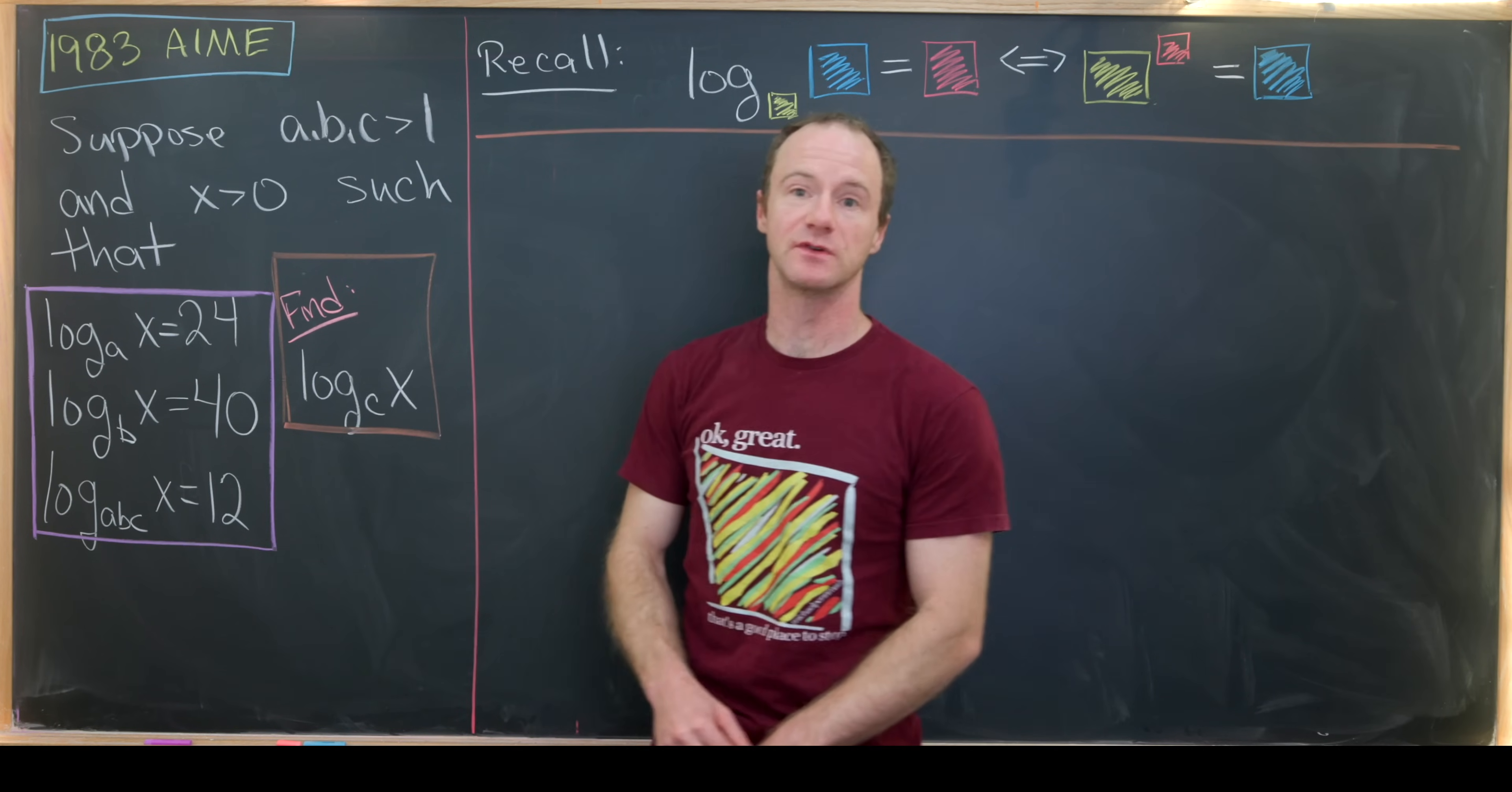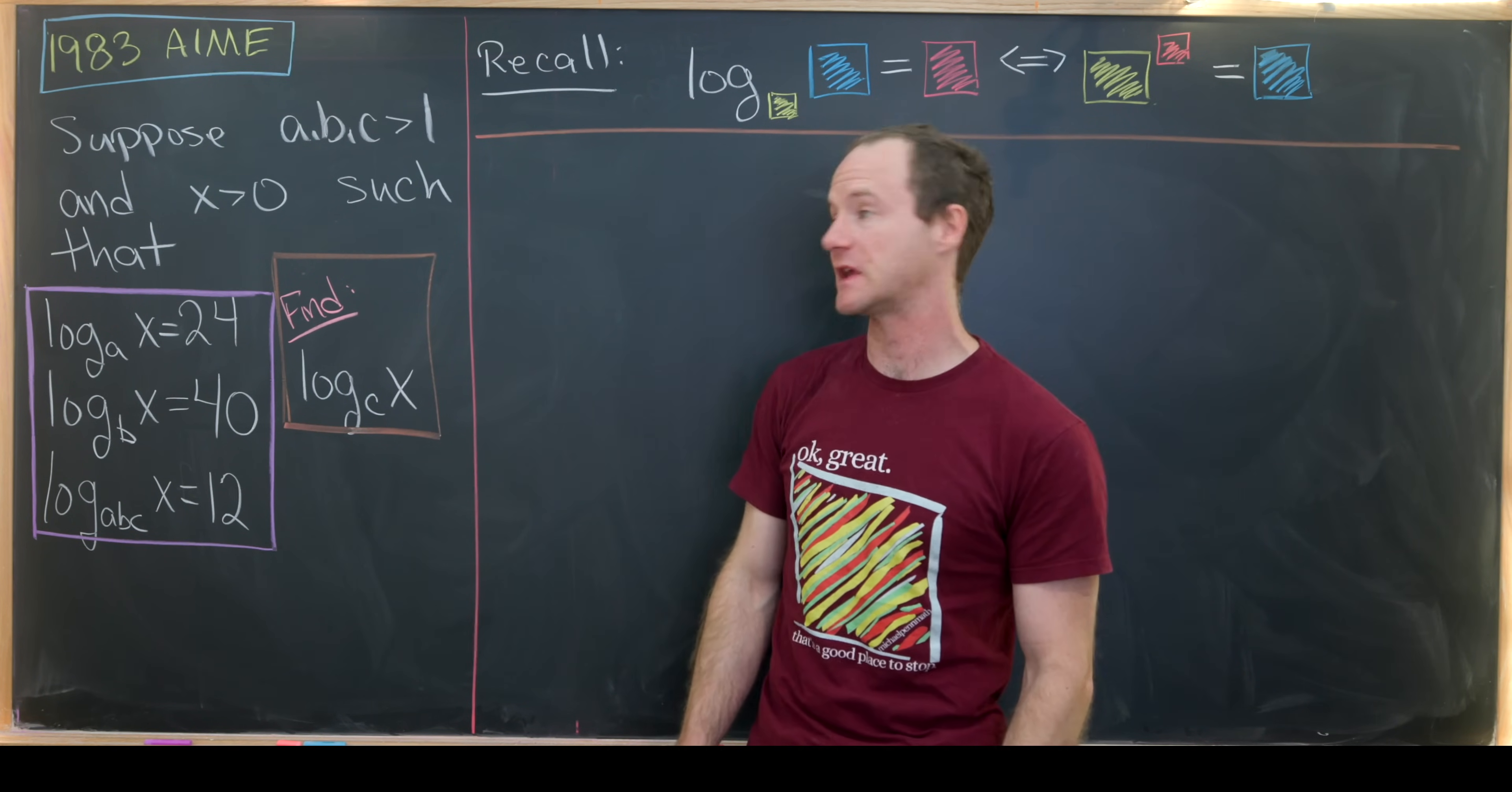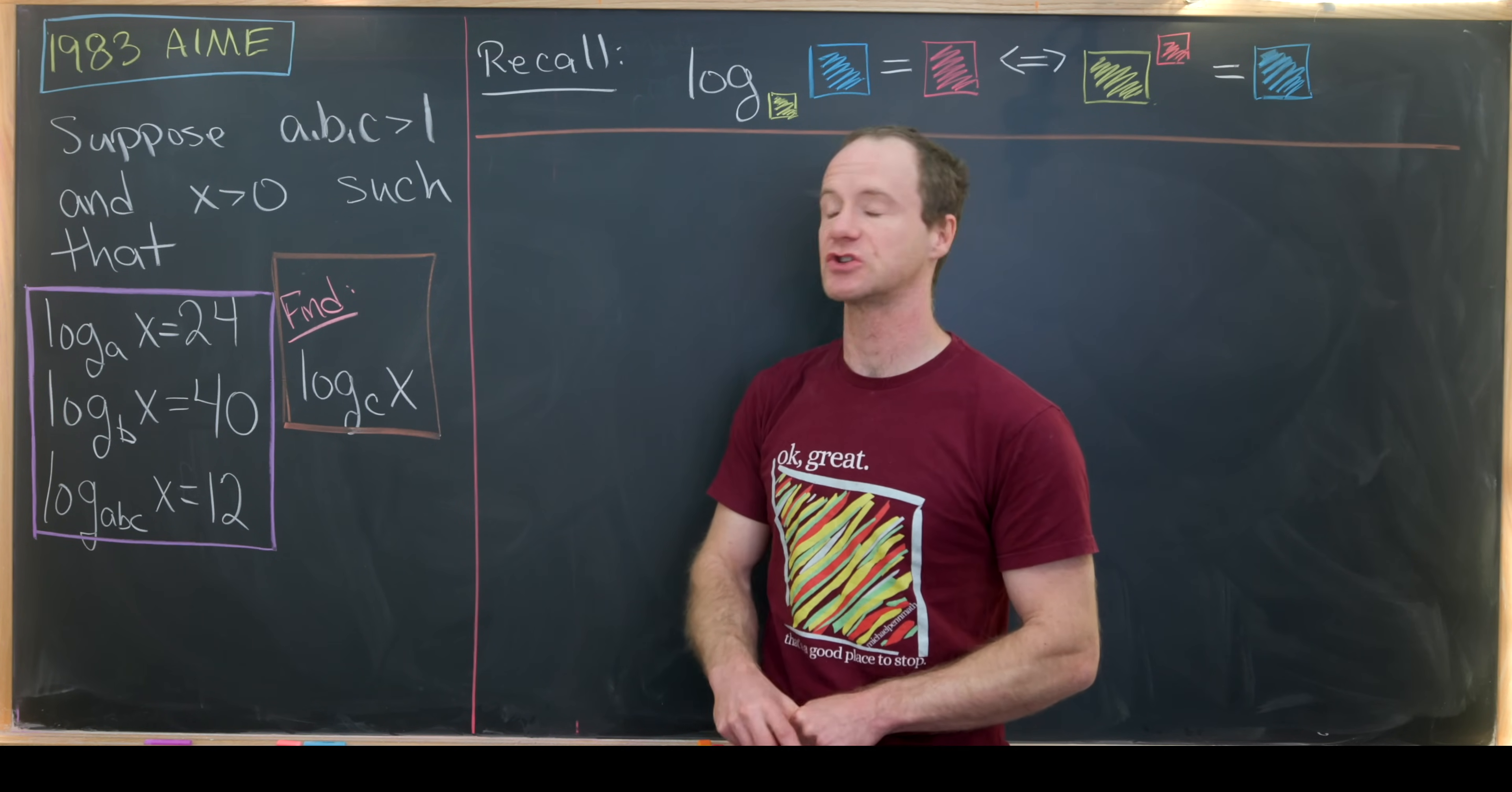We want to suppose we've got numbers A, B, and C larger than 1, and then a positive number X satisfying the following three logarithmic equations. We have log base A of X is 24, log base B of X is 40, and log base ABC of X equals 12.